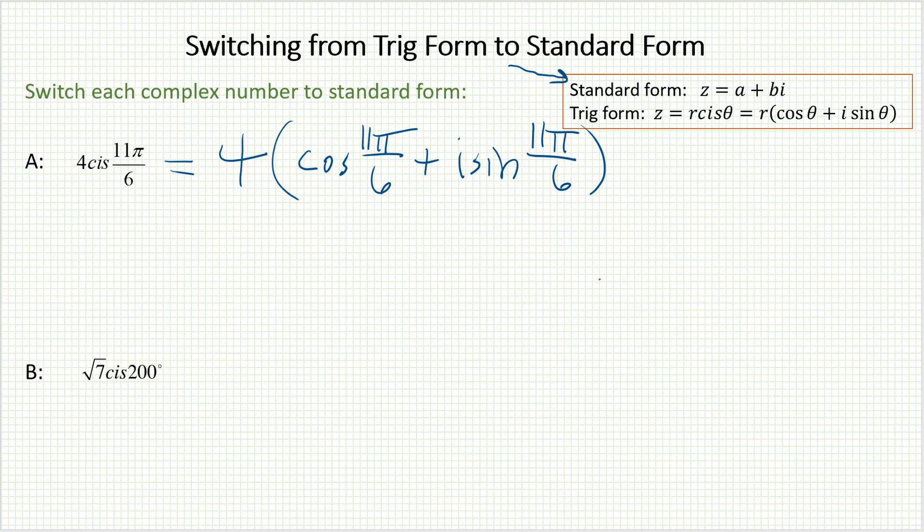And all you have to do now is calculate those two trig values. 11π over 6 is one of our nice angles, it's 330 degrees. The reference angle here would be 30 degrees, which means I could easily form a quick 30, 60, 90 triangle.